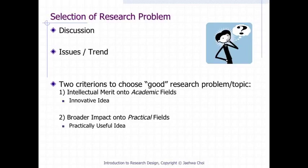To select a research problem, we often use discussion. Through discussion with experts, for example an advisor, we can identify a research problem by understanding issues and trends. We can also explore issues and trends of the research area of interest by literature review. Some researchers suggest two criteria for a good research topic: the first is intellectual merit onto the academic field, which concerns innovativeness of idea; the second is broader impact onto practical fields, which concerns practical usefulness of the research idea.